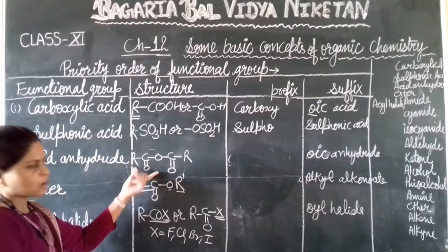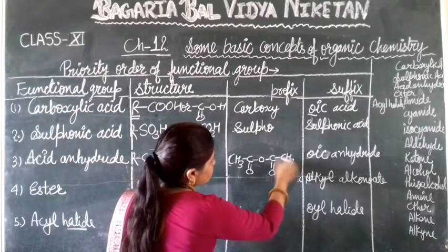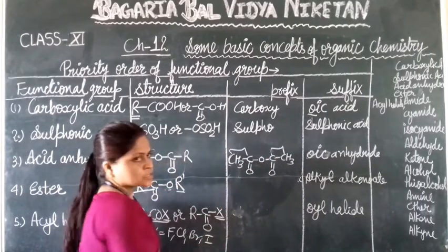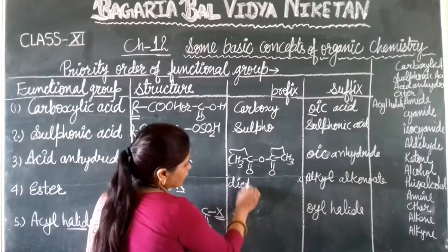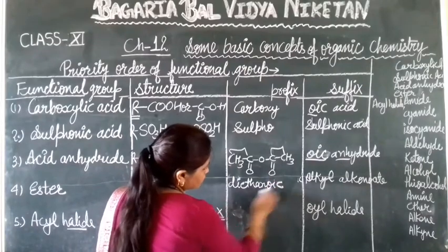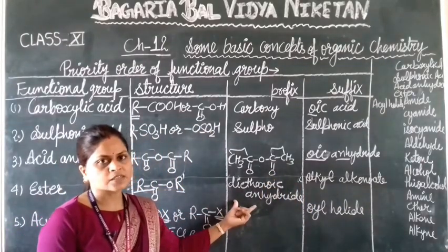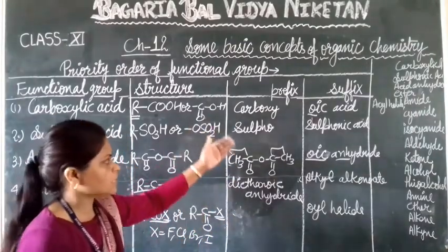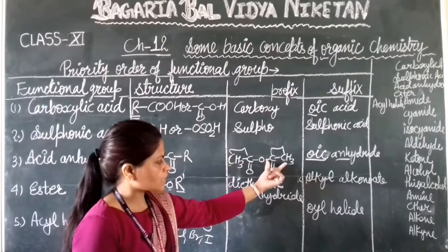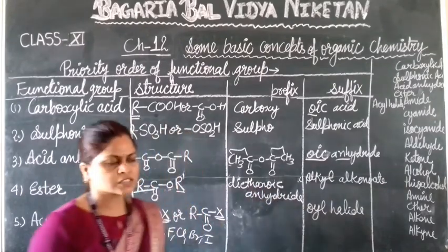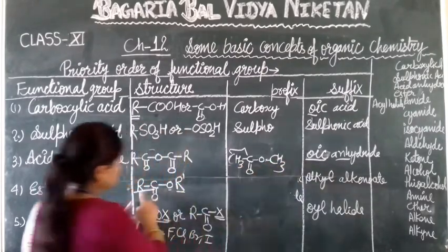Now for acid anhydride — here I have written an example. There are two carbons on each side, so both are ethane. Because there are two, we use the prefix 'di', making it 'diethanoic anhydride'. I will discuss all functional groups one by one during nomenclature; here I am giving a general overview so you understand how suffixes are used.